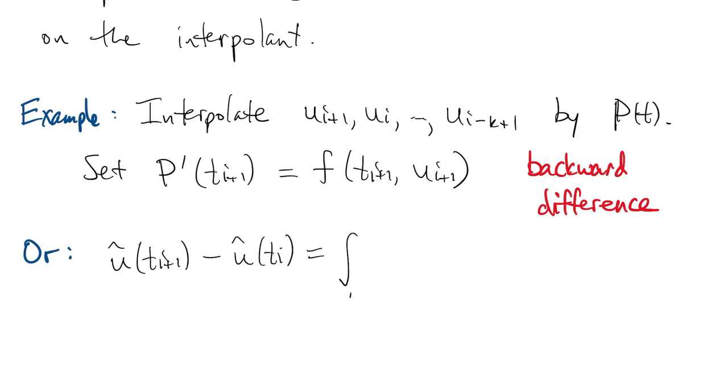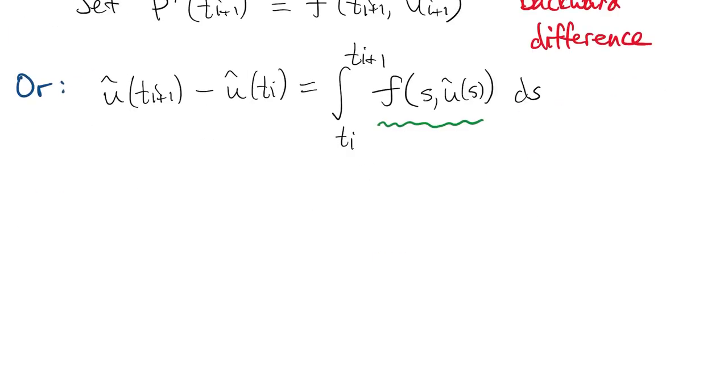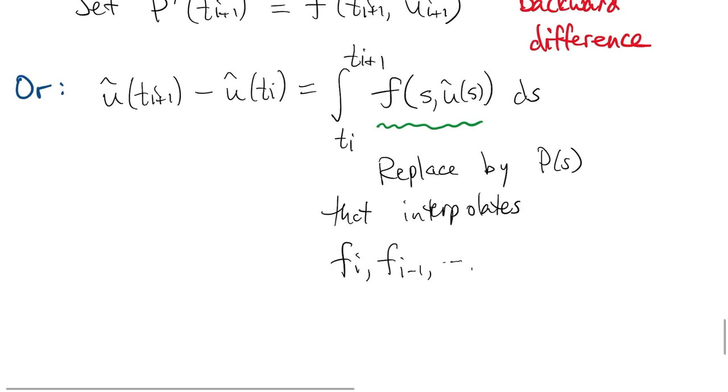Another alternative is to use the fundamental theorem of calculus. You can write the difference of u-hat values as the integral of its derivative, but the derivative of u-hat is f. We don't know u-hat at all times, so we don't know f at all times, but we know some values for f. So we'll replace this integrand by a polynomial interpolant of those values and integrate that. When you work that out, you get an Adams-Bashforth method.